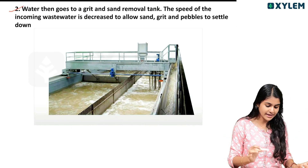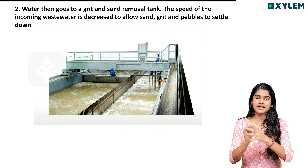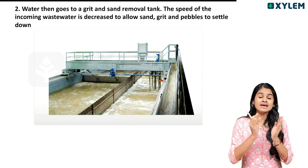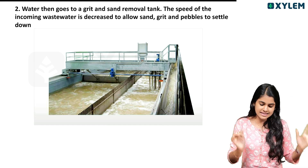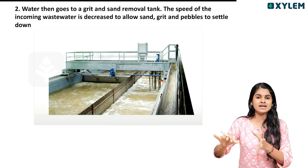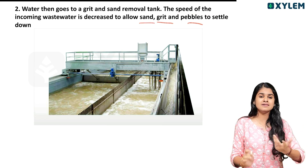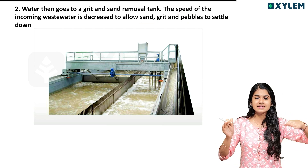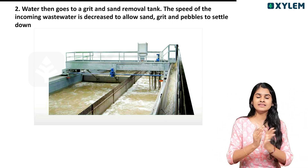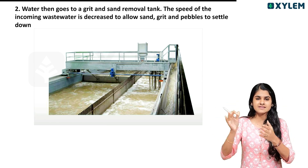Step 2: water then goes to a grit and sand removal tank. The speed of the incoming waste water is decreased. When the speed slows down, the sand and grit settle. From the bar screen, water is taken to the grit and sand removal tank and the speed is reduced.